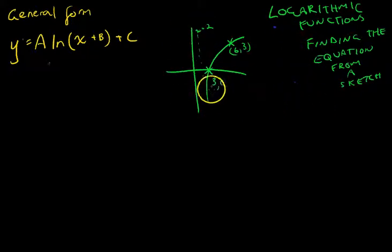So you can see I've got a sketch here of a logarithmic function. It's got a vertical asymptote. It's got a point here, an x-intercept at 3,0, and a significant point here at 6,3. So we're going to find the equation from that sketch.